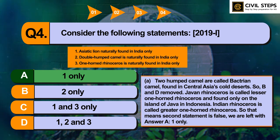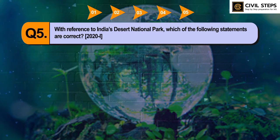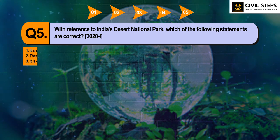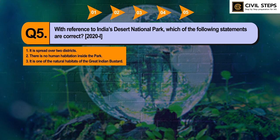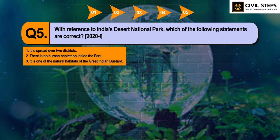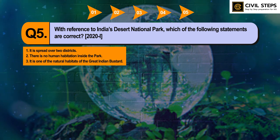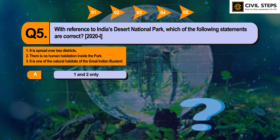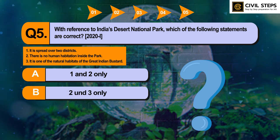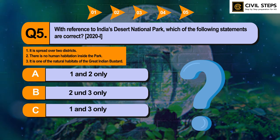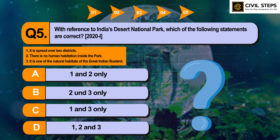Now let us discuss the final question of this video. With reference to India's Desert National Park, which of the following statements are correct? First: it is spread over two districts. Second: there is no human habitation inside the park. Third: it is one of the natural habitats of the Great Indian Bustard. Select the correct answer: Option A: 1 and 2 only. Option B: 2 and 3 only. Option C: 1 and 3 only. Option D: 1, 2, and 3.